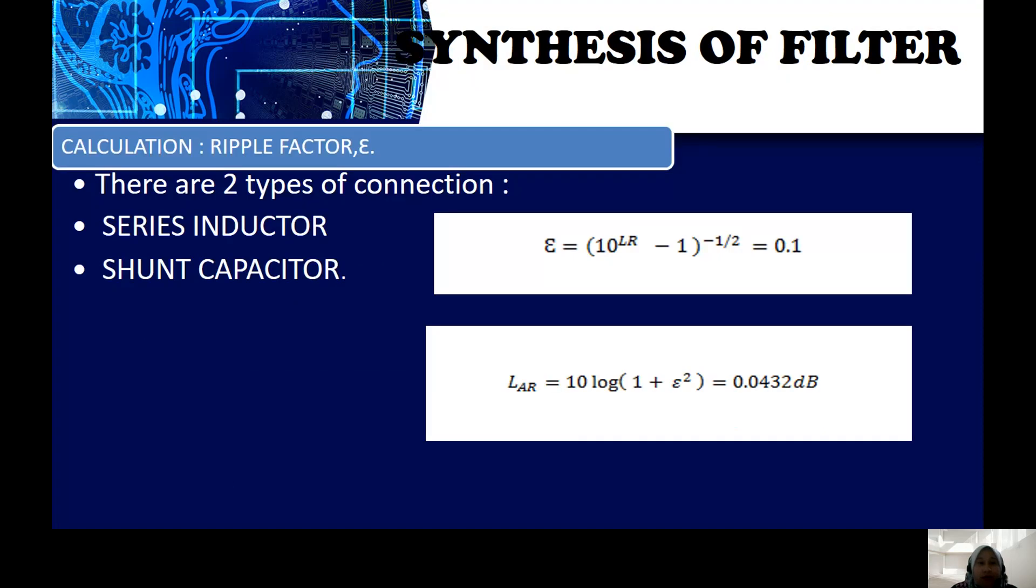Then the ripple factor is calculated by using the equation. The ripple factor yields to 0.1 and the LAR yields to 0.0432 dB. There are two types of connection for this filter: series inductor and shunt capacitor, where the inductor is connected in series and the capacitor is connected in shunt or parallel.